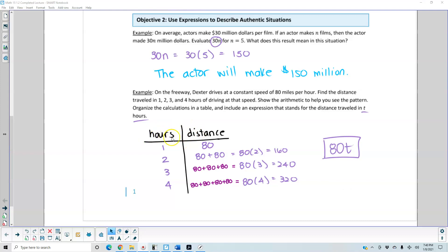The first column is hours. The second column is distance. If you travel 1 hour, we know the distance is 80 miles per hour, so we're traveling 80 miles. In 2 hours, that means we're going to travel 80 plus 80, which is the same thing as 80 times 2, which equals 160.